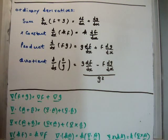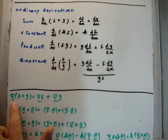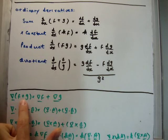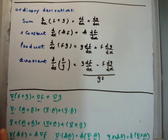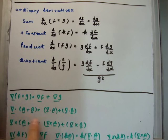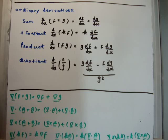If we take the gradient of a sum, we get the sum of the gradients. If we take the divergence of a sum, we get the sum of the divergences. If you take the curl of a sum, we get the sum of the curls.